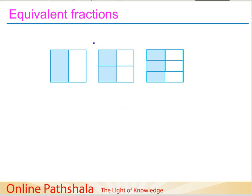Let us first try to understand equivalent fractions. Consider three figures given here. For the first square, which is divided into two parts, the denominator is two and since one part is covered with blue color, we write the numerator as one. So the fraction represented by this figure is one by two.